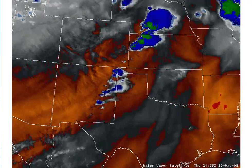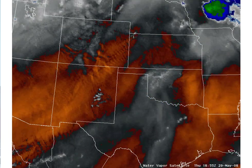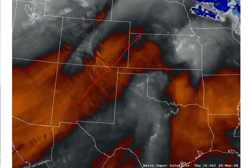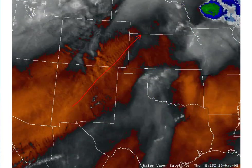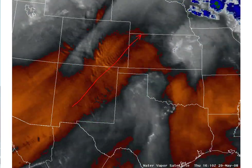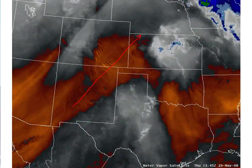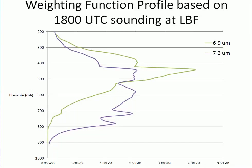In this example, the water vapor imagery shows a well-defined upper-level jet oriented northeast to southwest from New Mexico to eastern Colorado, northwest Kansas, and southwest Nebraska. Convective initiation occurs along the juxtaposition of the dry line and the upper-level jet. The weighting function profile gives a clear indication of what level the channel is seeing — based on the 18Z sounding at North Platte, Nebraska, for the 6.9 micron wavelength, which is representative of the 6.5 or 6.7 micron water vapor imagery.